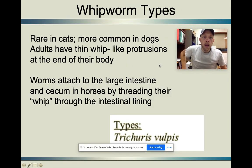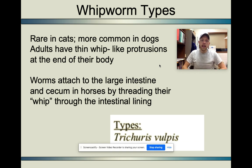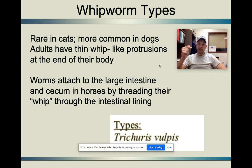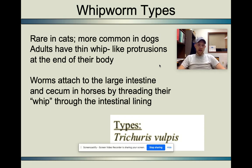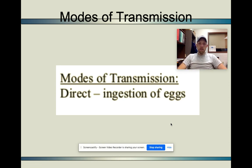Whipworm is pretty rare in cats and most common in dogs. The adult worms have that whip-like tail and attach to the large intestine. It's also very common in horses — we see that tail actually thread through the cecum. They're absorbing nutrients through the blood passing by that intestinal lining. The type is Trichuris vulpis. Mode of transmission: directly ingest whipworm eggs.